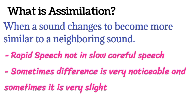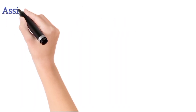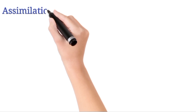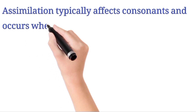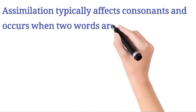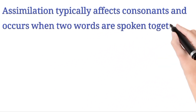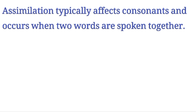In slow, careful speech, we are careful about the words. Sometimes the difference is very noticeable and sometimes it is very slight — it depends upon the accent and the speed of the speaker. So assimilation is mostly found in rapid speech. Another important point: assimilation typically affects consonant sounds, not vowels. Consonant sounds are most affected by assimilation.